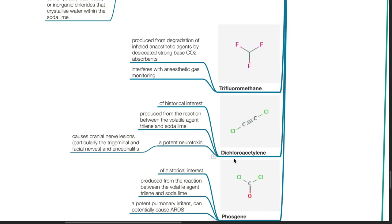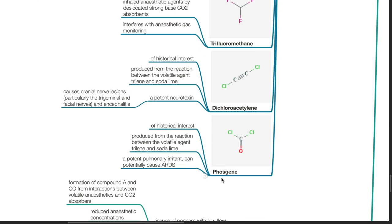Trifluoromethane is produced from degradation of inhaled anesthetic agents by desiccated strong base carbon dioxide absorbents, and this interferes with anesthetic gas monitoring. Dichloroacetylene — of historical interest — is produced from the reaction between the volatile agent trichloroethylene and soda lime. It is a potent neurotoxin causing cranial nerve lesions, particularly in the trigeminal and facial nerves, and encephalitis. Phosgene, also of historical interest, is produced from the reaction between trichloroethylene and soda lime; it is a potent pulmonary irritant and can potentially cause ARDS.